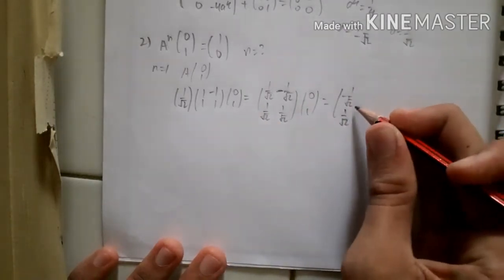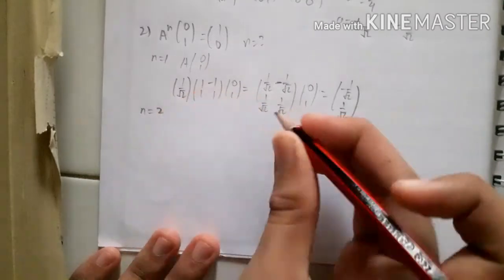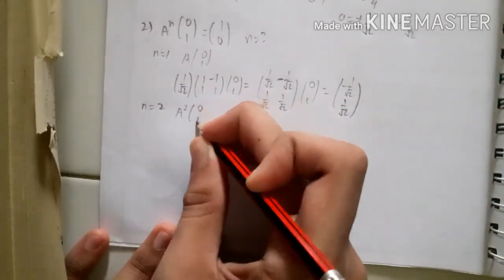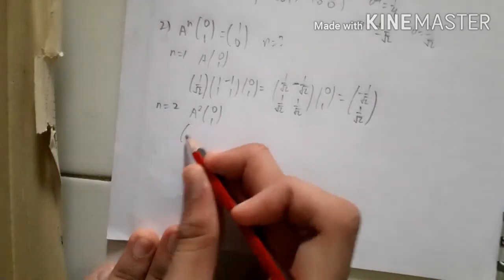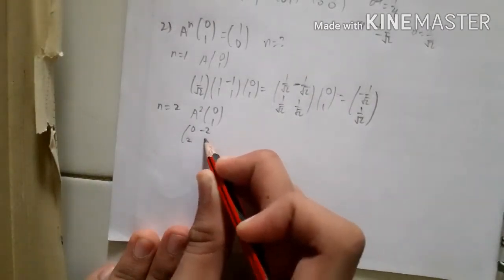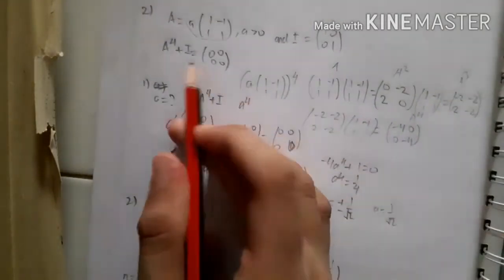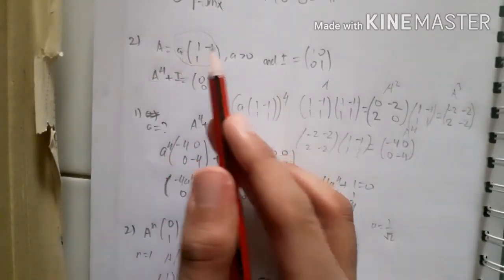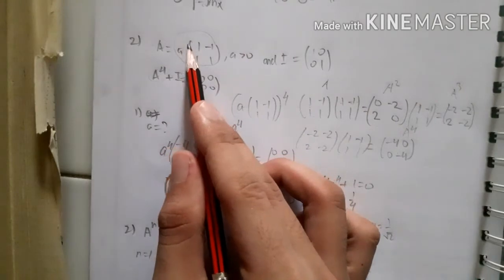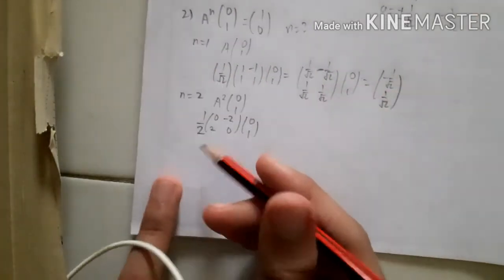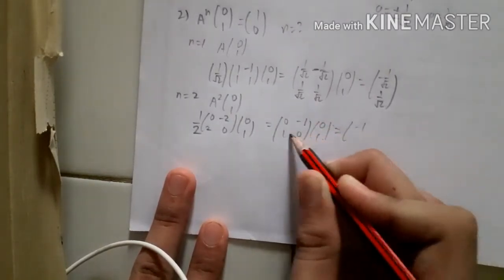For n=2: A squared times [0,1]. We have A squared with constant factor 1/2 giving [[0,-1],[1,0]]*[0,1] = [-1,0], which is not [1,0]. For n=3: A cubed has elements with factor 1/(2√2) times [[-2,-2],[2,-2]]*[0,1], giving a result that still contains √2, so that is not the answer either.